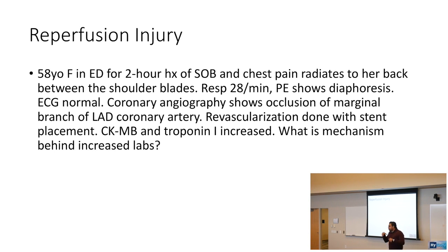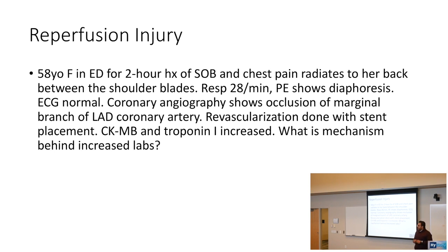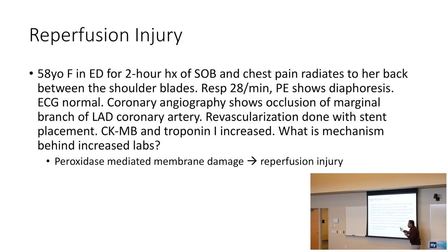Reperfusion injury — this is a good biochemistry tie-in. A 58-year-old female in the emergency room for two hours of shortness of breath and chest pain radiating to her back between the shoulder blades. Respiratory rate is high, physical exam shows diaphoresis. EKG is normal. However, coronary angiography shows occlusion of the marginal branch of the LAD coronary artery. After revascularization with a stent, CKMB and troponin I are increased. The mechanism is peroxidase-mediated membrane damage — when you have an occlusion, biochemically you get free radical buildup before that occlusion, and once you introduce blood flow again, you can get this reperfusion injury.